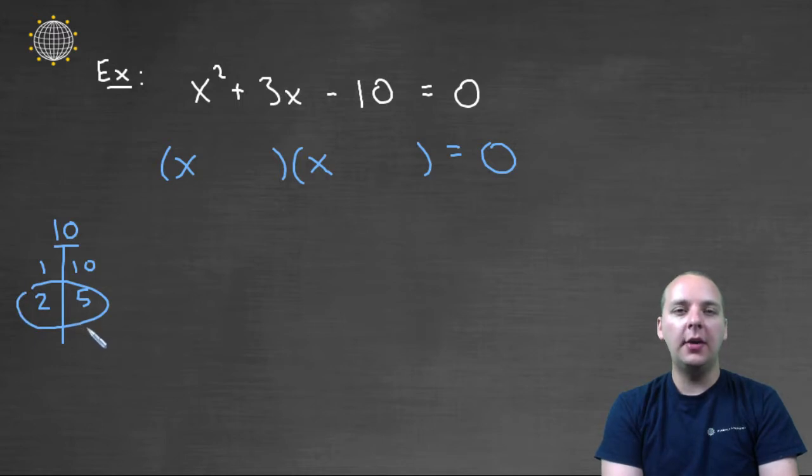Well the two and the five could add up to three if the signs were right. So I'm going to put a two and a five, and I'm going to see if I can fit the pluses and minuses to make this be a positive three, where the product is negative ten. So to get a sum of positive three, I think we'd have to have plus five and minus two.